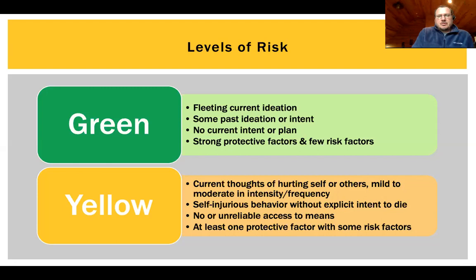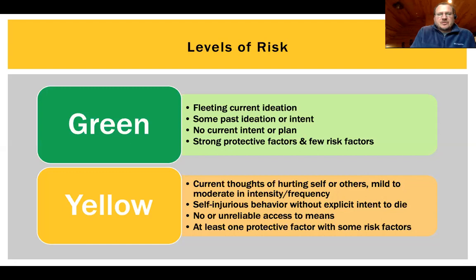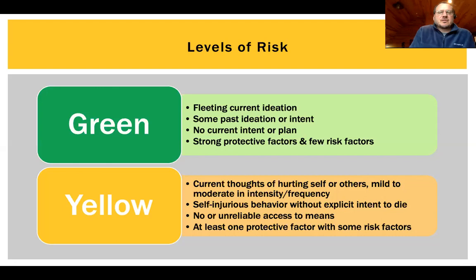Green: these are kids who have some current ideation, but it's fleeting and not very intense — it just sort of pops into their head. There may be some past, more intense ideation or intent, but no current intent or plan. There are strong protective factors — social connectedness, supportive family, religious values — and fewer risk factors, particularly around access to means, past attempts, and severe depression or anxiety.